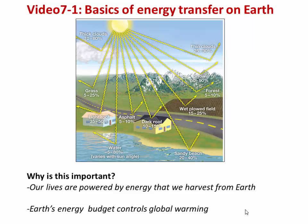Welcome to video number seven. In this video we're going to talk about Earth's energy budget and how energy is transferred between different systems on the surface of the earth. Recall in the last video we talked about nuclear energy and radioactive decay. Today we're going to focus mostly on energy coming in from the Sun and how that gets distributed through the earth system. This is important because our lives are powered by the energy we harvest from earth, and Earth's energy budget controls global temperature and global warming.